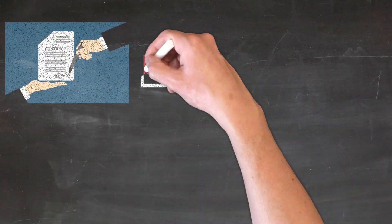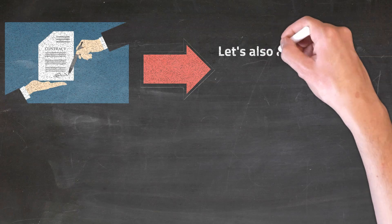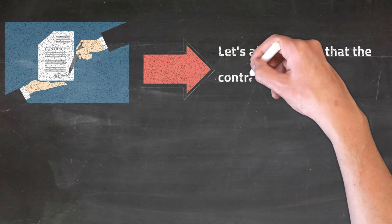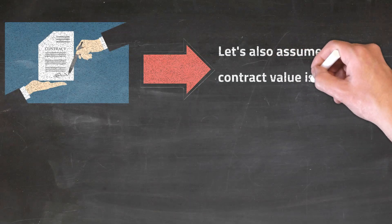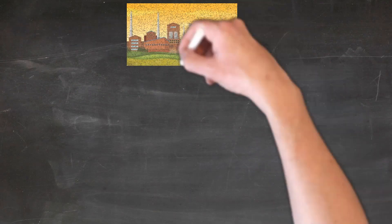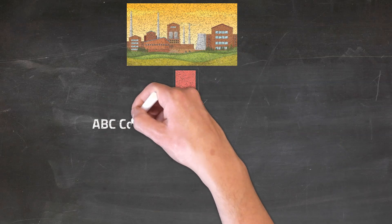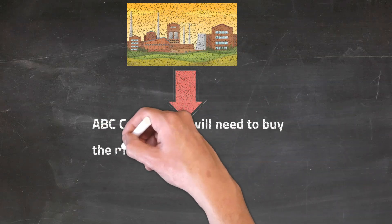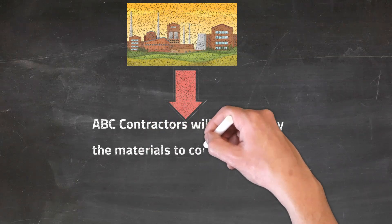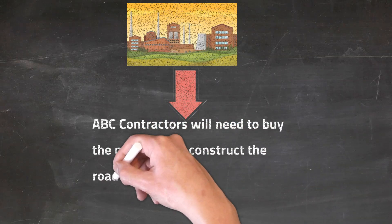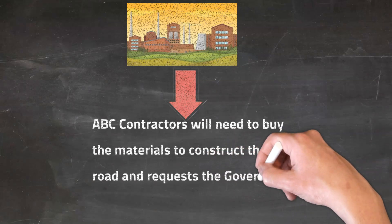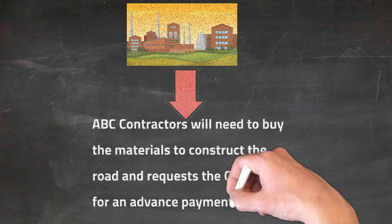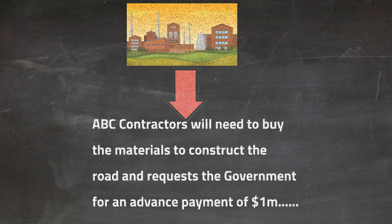The contract has been signed and let's also assume that the contract value is $10M. ABC Contractors will obviously need to buy the materials to construct the road and will request the government for an advance payment of $1M.